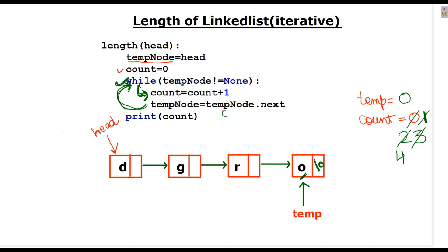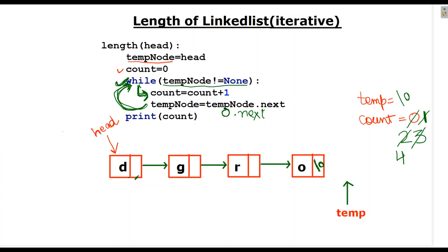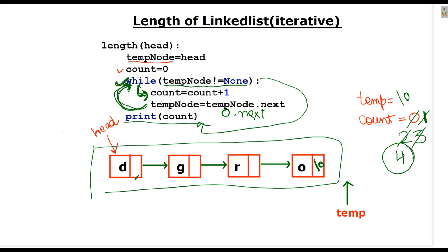Temporary node is O, and O dot next — this block is always pointing towards next. So now temporary node is at None. This time when it goes to the while loop it will ask whether temporary node is not equal to None, but here it is equal to None. So it will come outside the while loop and will print count. Count is 4, so the length of the linked list here is 4.